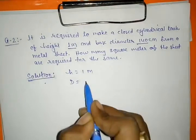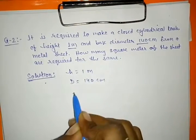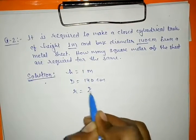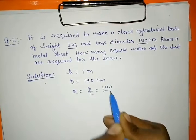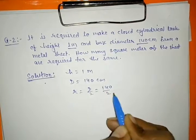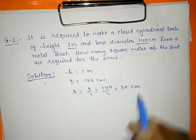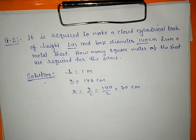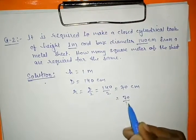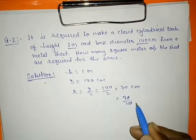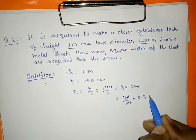Radius equal to diameter upon 2, it means 140 upon 2 equal to 70 centimeter. Converting: 70 upon 100 equal to 0.7 meter.